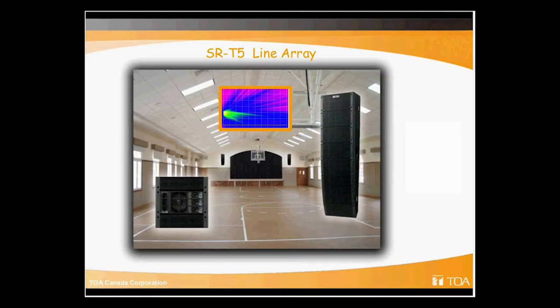So with the SRT-5, this is making the line array product lineup a little bit bigger for us. The idea of the SRT-5 is to make a very simple installation in these typical gymnasiums that we have in the school marketplace. If you're familiar with the HX-5, the SRT-5 is a continuation of that sort of technology. Basically, the T-5 is two HX-5s in one complete package. So the two units are more or less welded together in a 35-degree mode for the vertical dispersion.